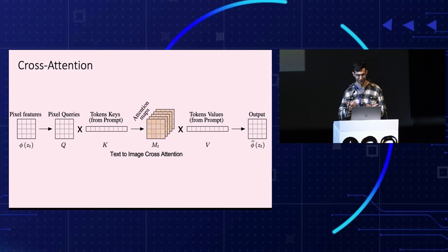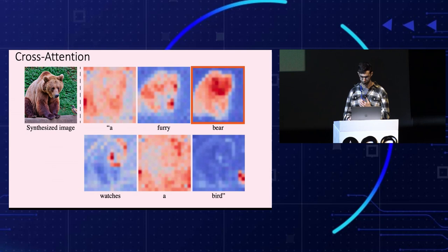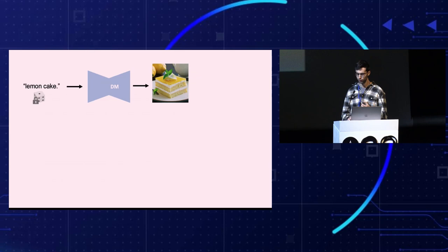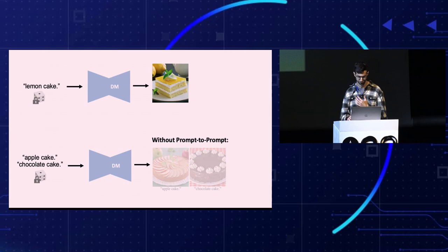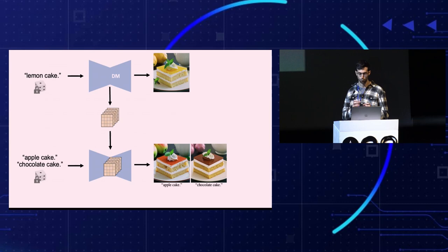So how does it work? Our key observation is that the cross-attention maps deep inside our model control the relations between pixels and words. And therefore, we can preserve the structure of the original image by injecting these attention maps, which are visualized here behind me. For example, starting with this lemon cake, using the same seed results in completely different cakes. By injecting the internal cross-attention maps which produce the original image, we can finally get a square chocolate cake or even a square pasta cake.